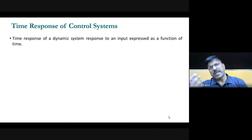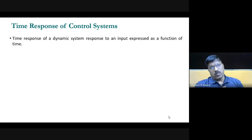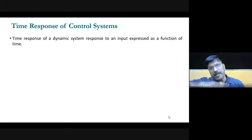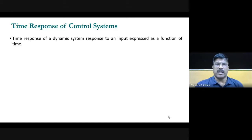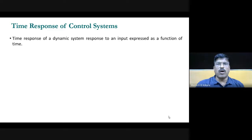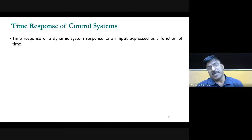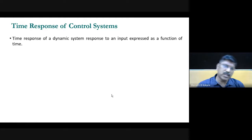What is the time response of the system? When you are measuring the output for a given input with respect to time, the independent variable is time and the dependent variable is the response. You are measuring the response of a system with respect to time, so time is taken as an independent parameter and that dynamic response is called the time response.